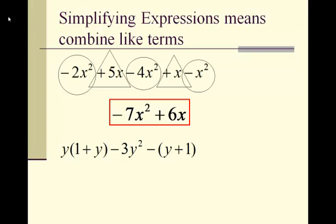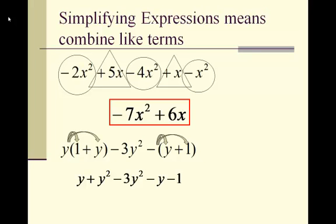On the second problem, before we begin, we want to first distribute through the parentheses. We have a y to distribute in the first set of parentheses and we have a negative sign to distribute in the second set of parentheses. When we distribute the y through the first parentheses, we get 1y or y plus y squared. And when we distribute through the second set of parentheses, we get negative y minus 1.